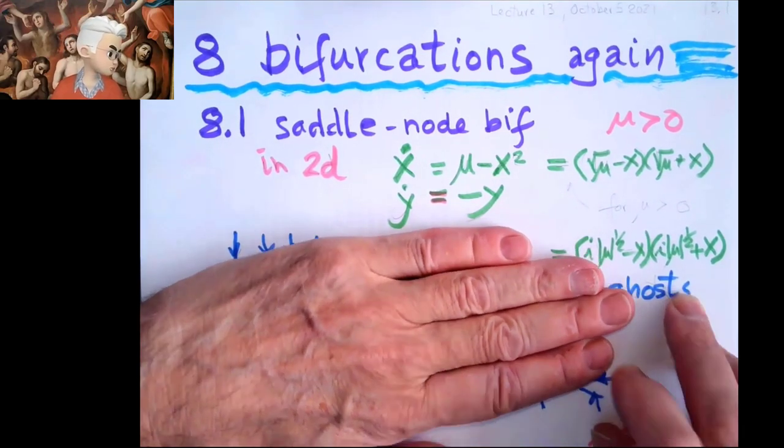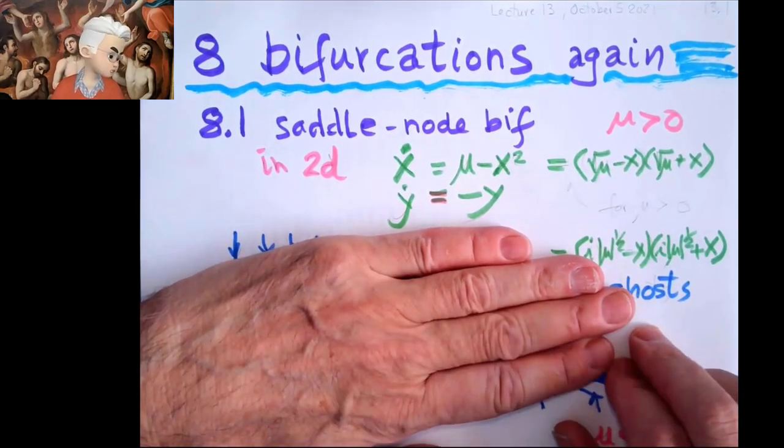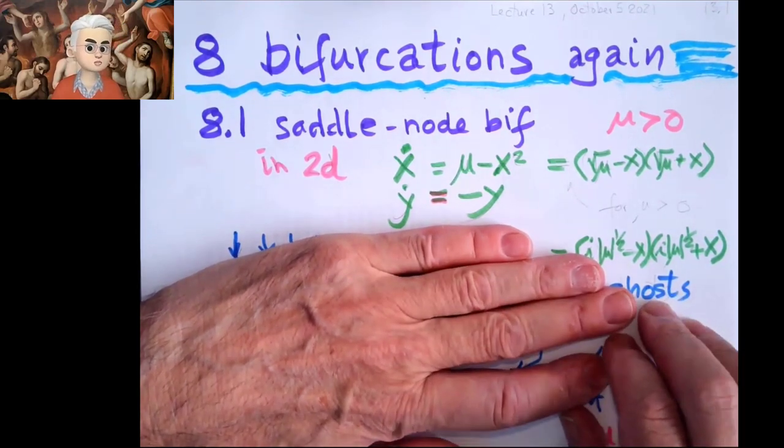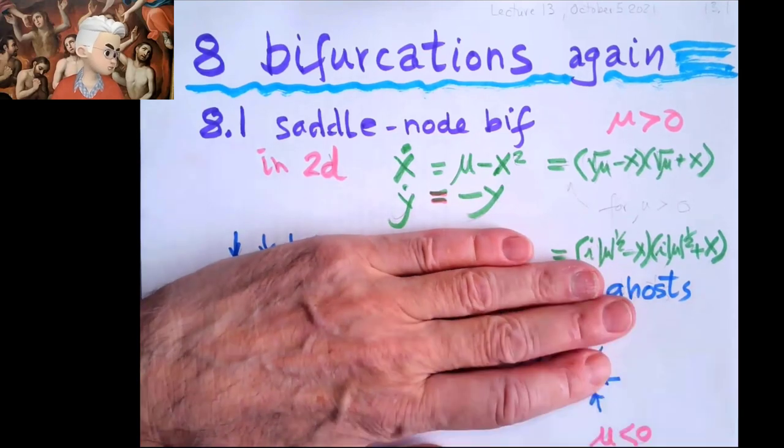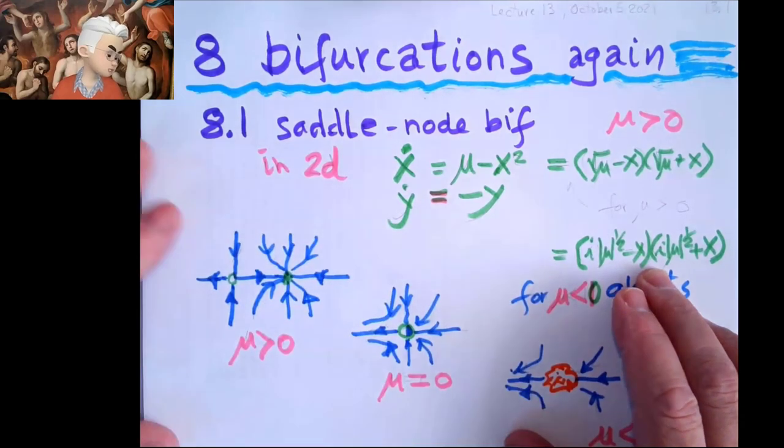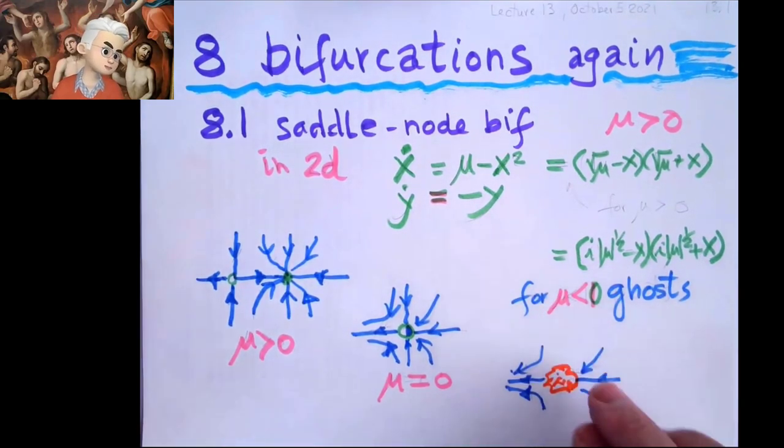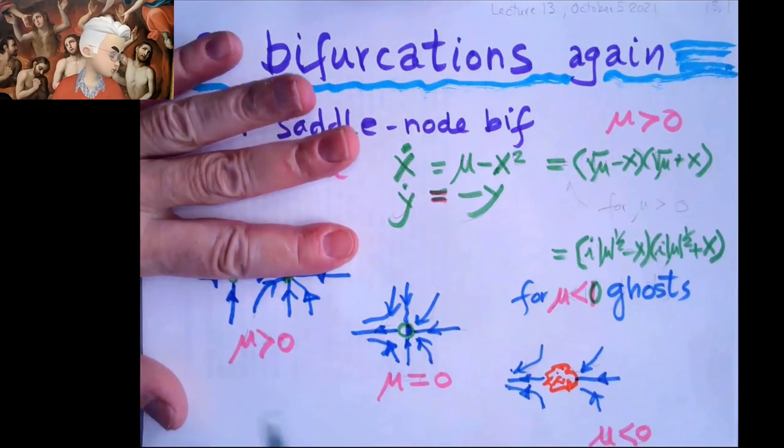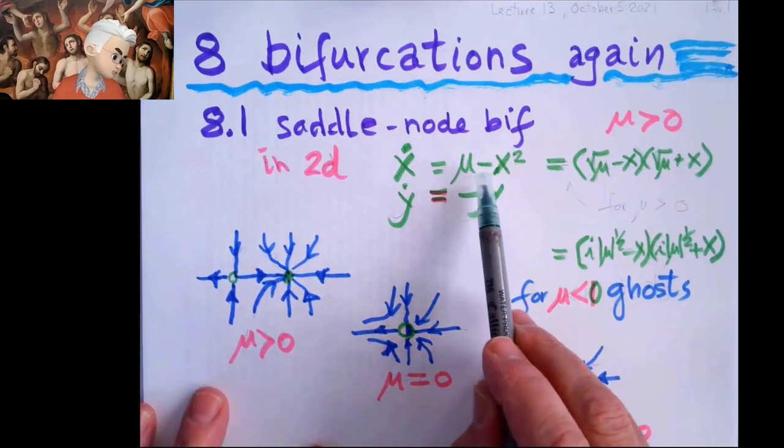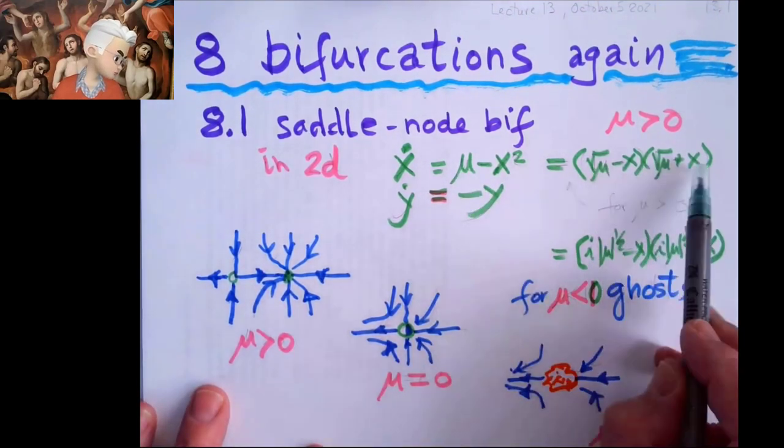All that's happening in the second dimension is I always have negative velocities. I'm always going towards zero. So the flow in two dimensions looks like this. When mu is large, then if there is no second dimension, if it's positive, then there are these two zeros.